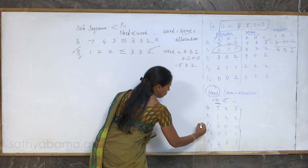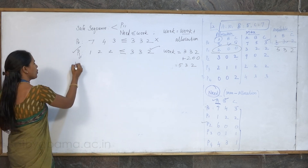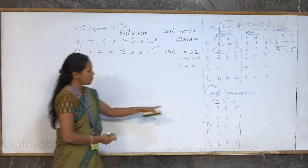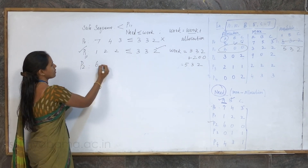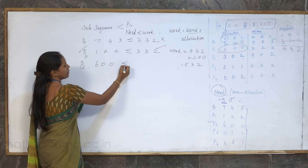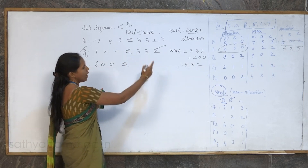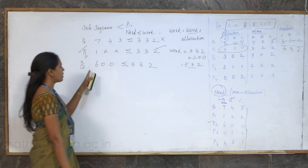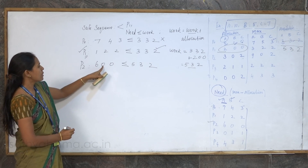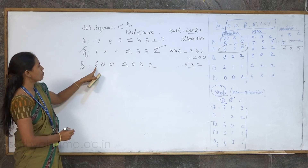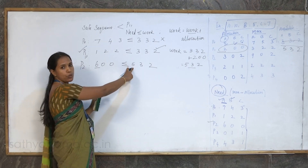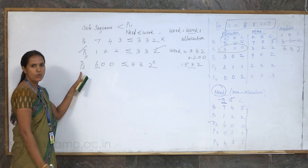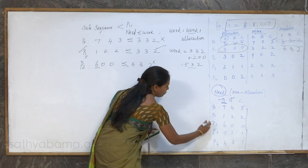Now start process P2. P2 requirement is 6, 0, 0. Check condition against available 5, 3, 2. Resource A requirement is 6 but available is only 5, so the request is not granted for process P2. P2 has to wait.